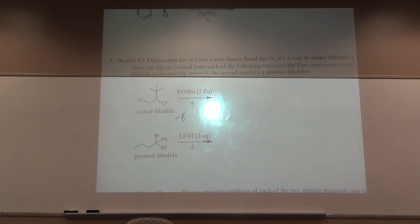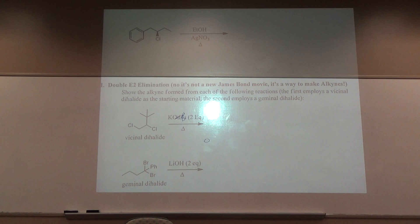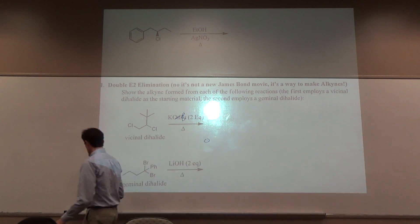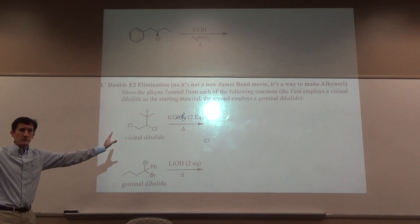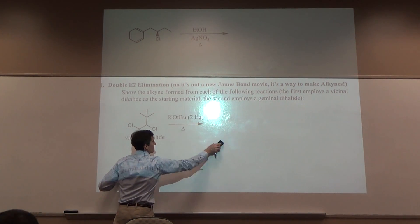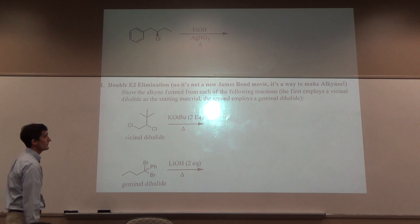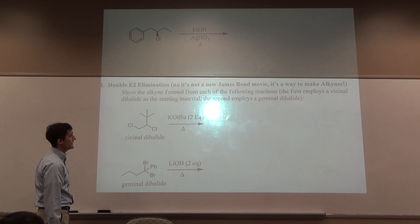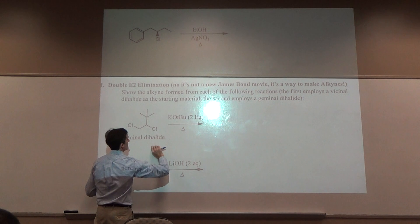This brings us to pretty much the last topic of the handout, and that is double E2 elimination. If a compound has two leaving groups, you can do a double E2 elimination. Now they can be very separate. You can make two alkenes. But typically what we're talking about is to make two pi bonds between the same carbons and thus end up with an alkyne. So typically this is a way to make alkynes. For example, you take this vicinal dichloride and treat it with two equivalents of strong base.